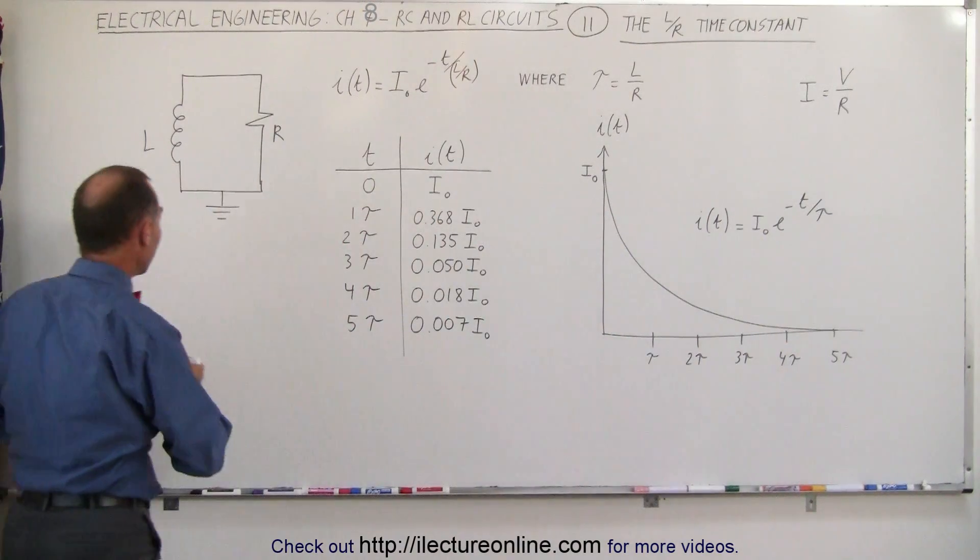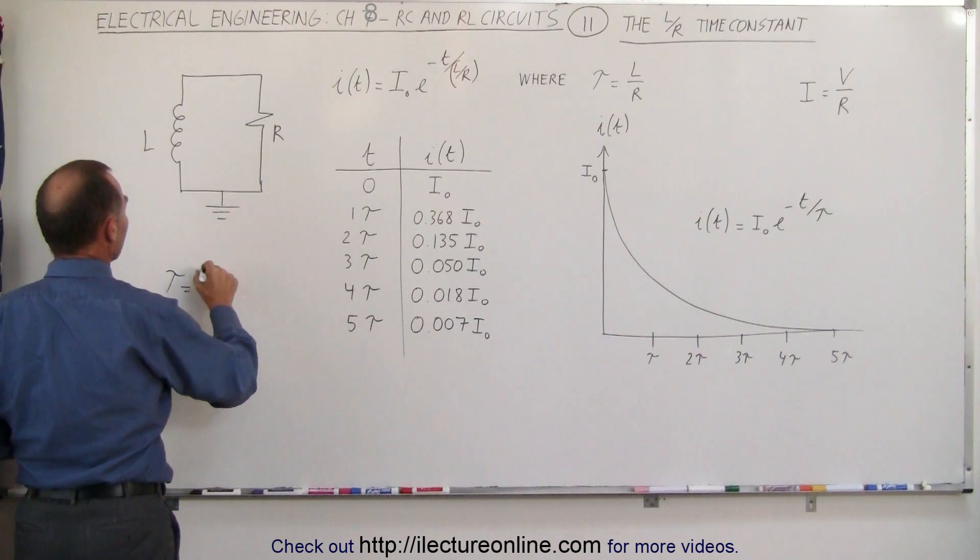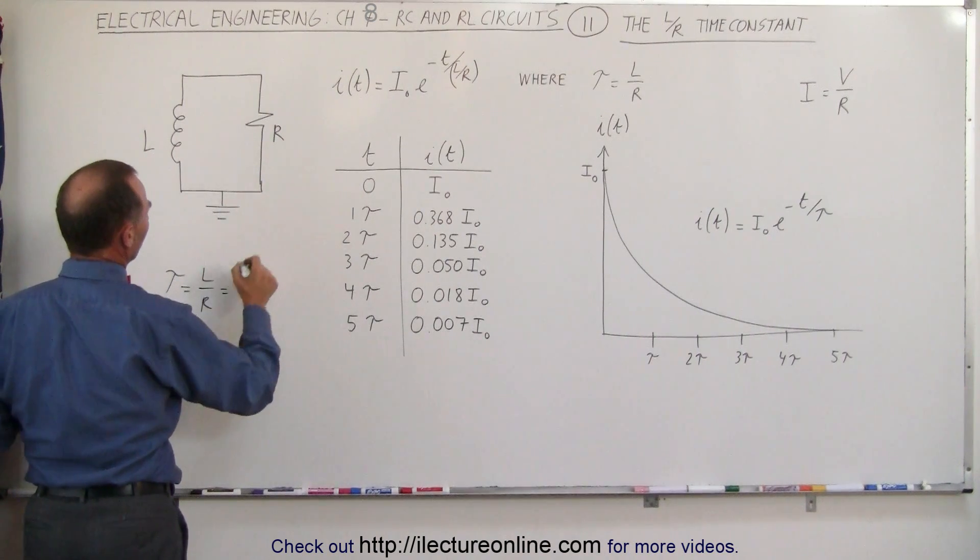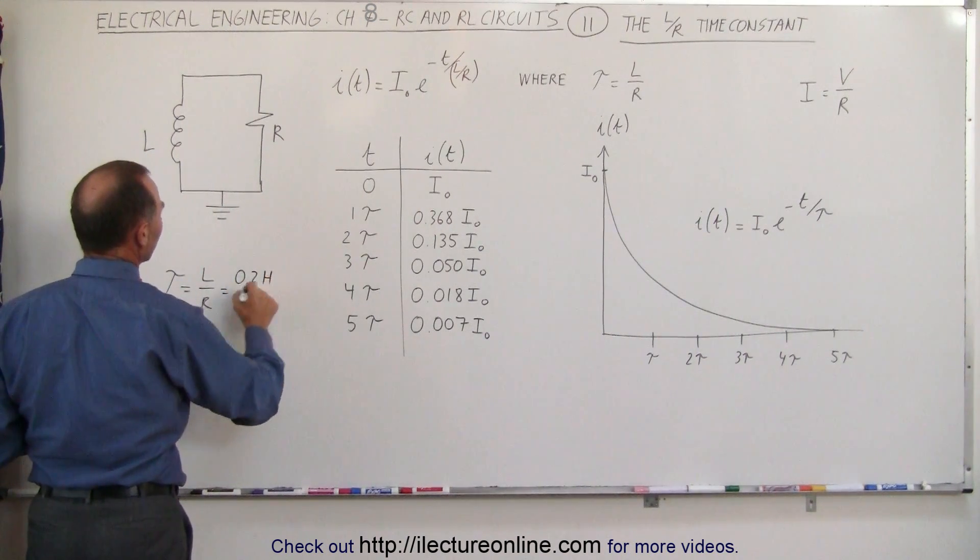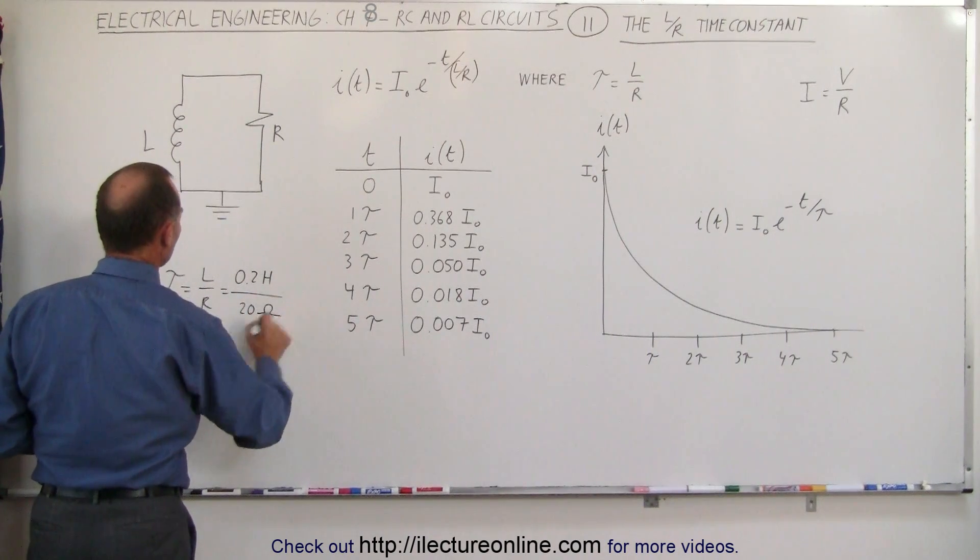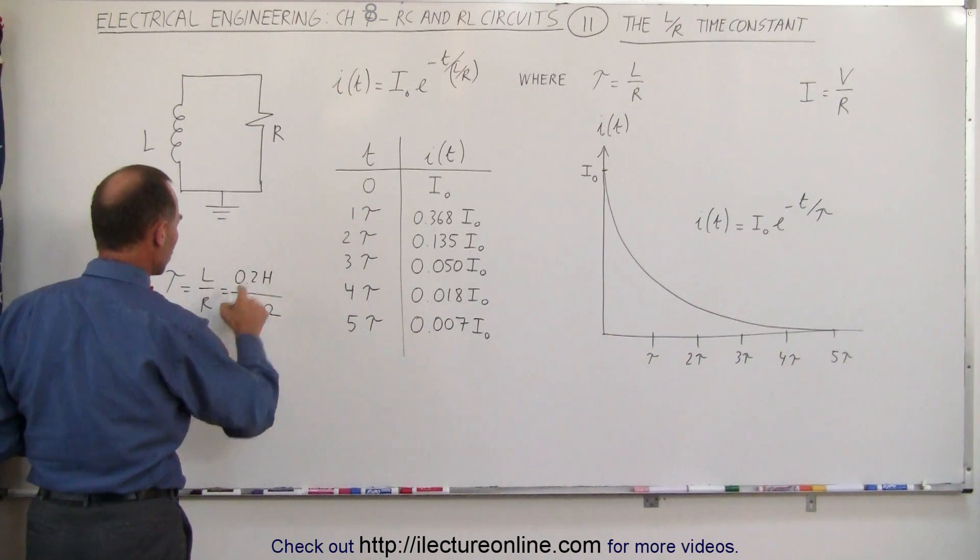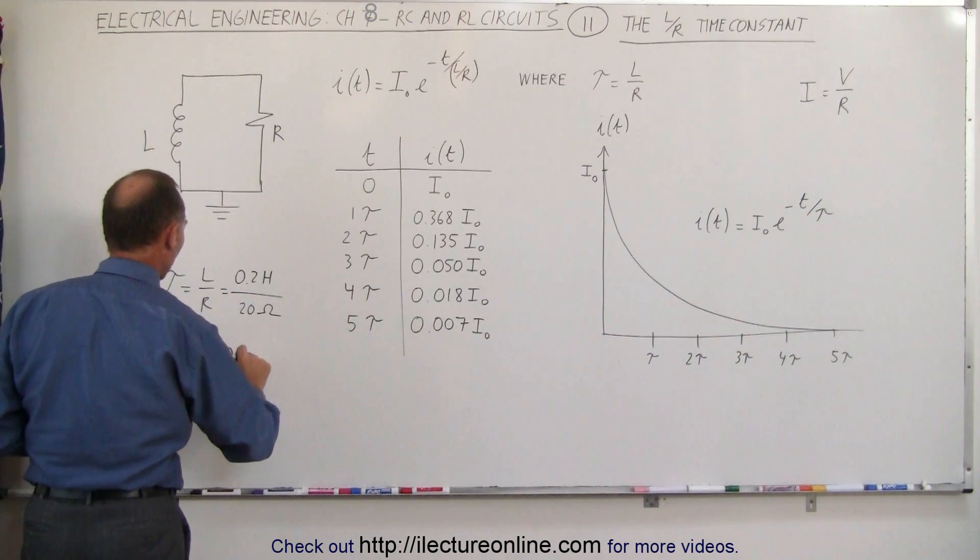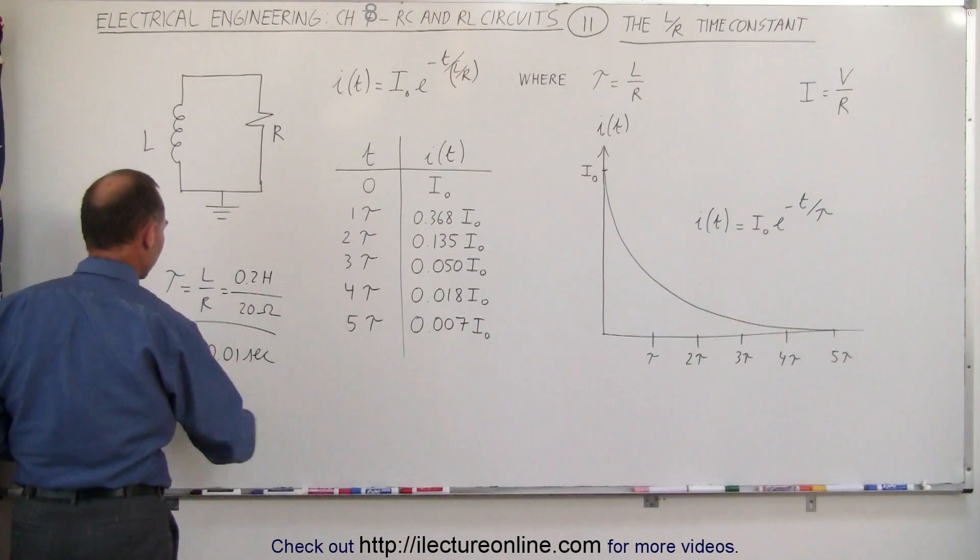As an example, let's say that the inductance is equal to, let's say, 0.2 henrys, and let's say that the resistance is equal to 20 ohms. You can then see that the time constant would be equal to 0.01 second, 1/100 of a second.